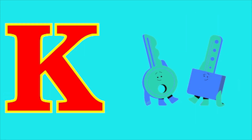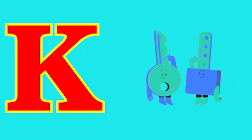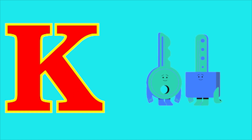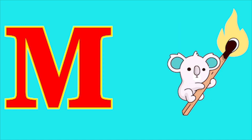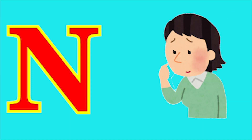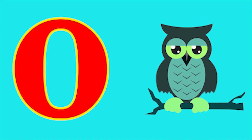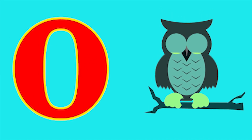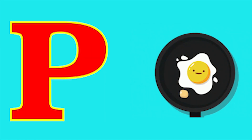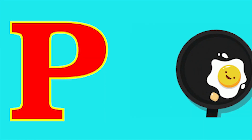K for keet, L for leaf, M for magic, N for nose, O for owl, B for pan.